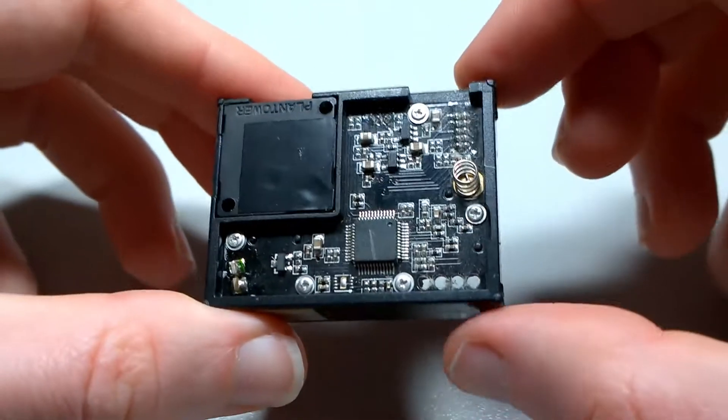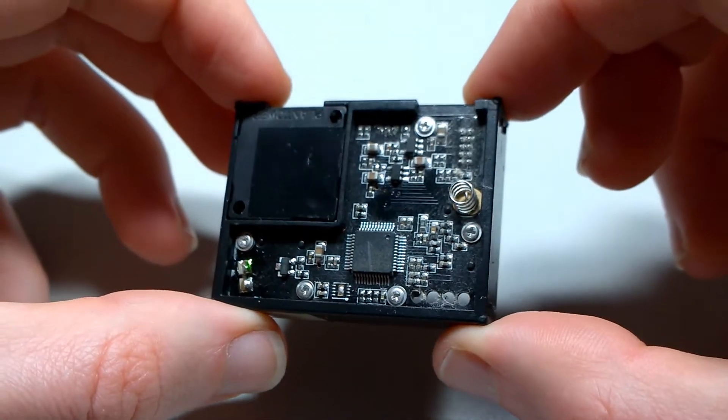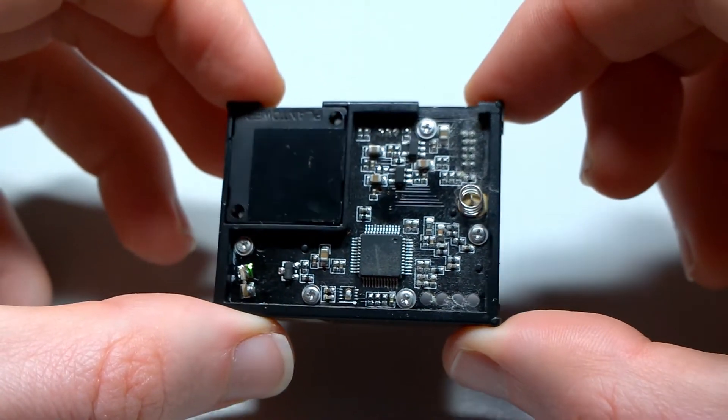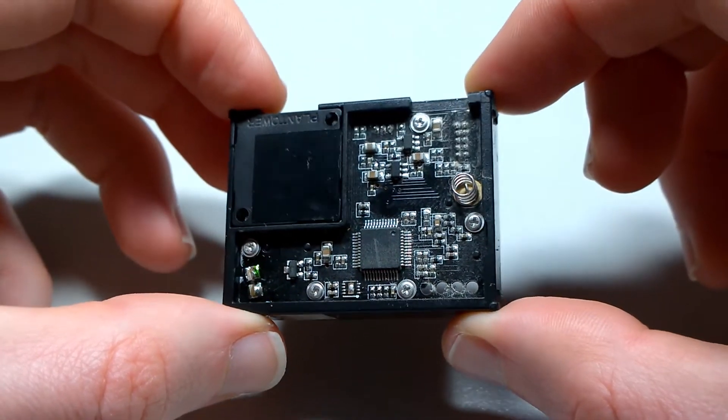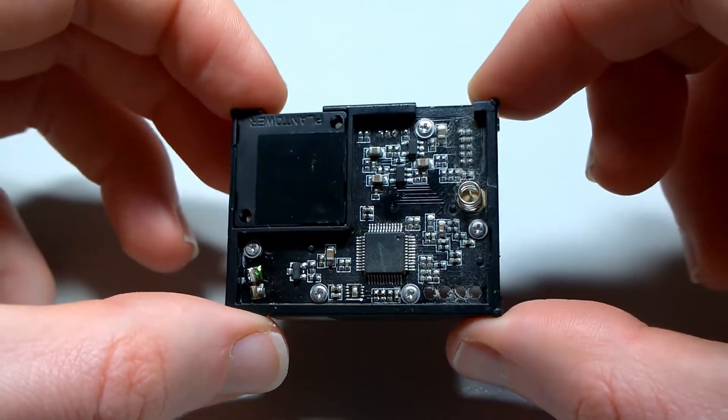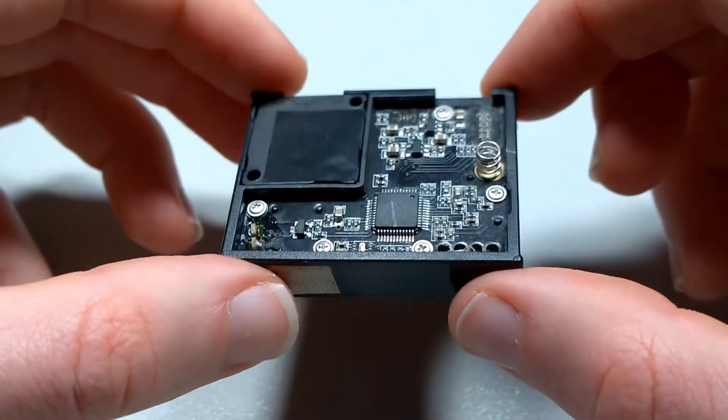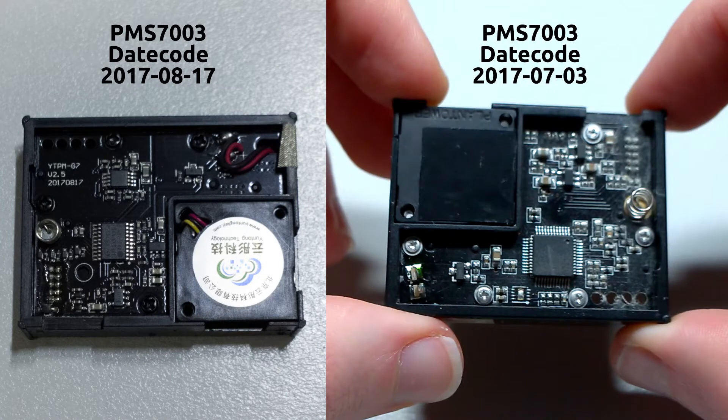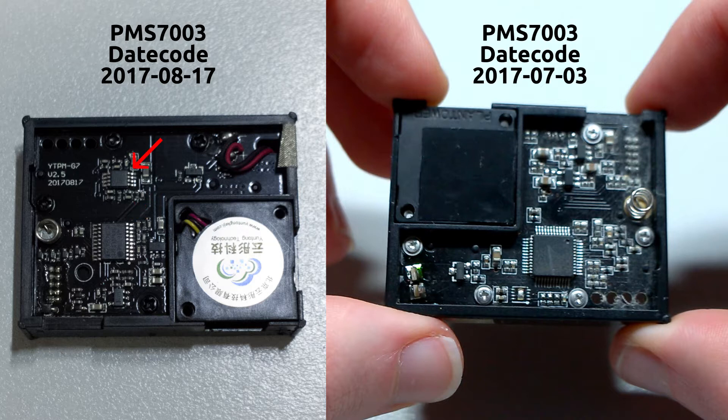The other side of the device has the PCB, and this is actually different to what I was expecting. I took one of these apart last year and it was a completely different design. Here's a picture, and as you can see, this one today has a custom Plantower chip, whereas the other one has an ST chip and some other 8-pin SSOP package. So I'm not quite sure what's going on here.